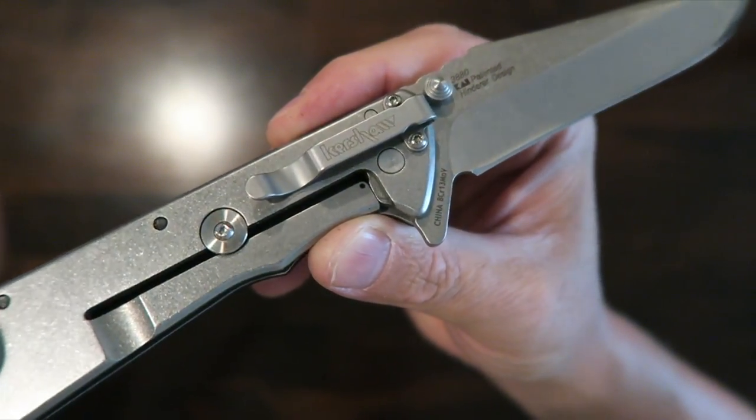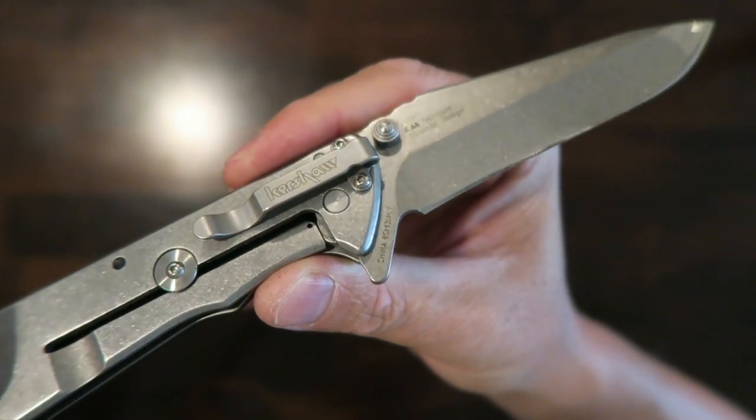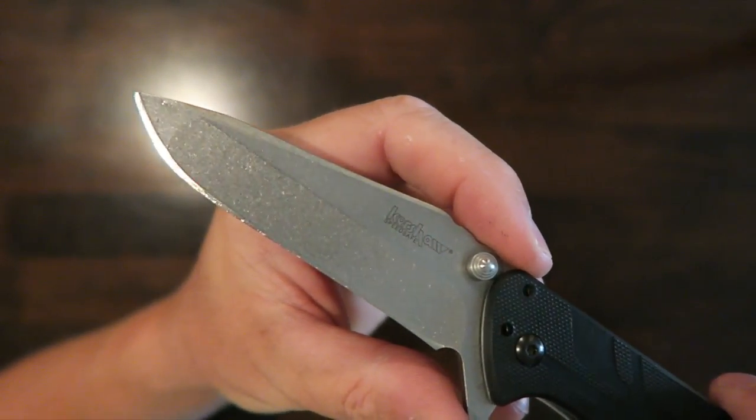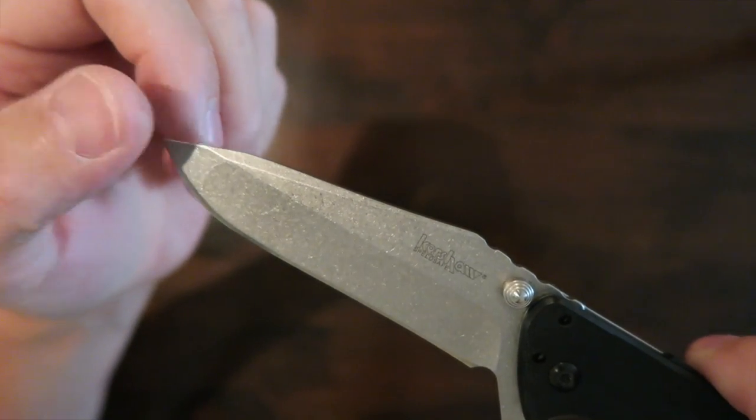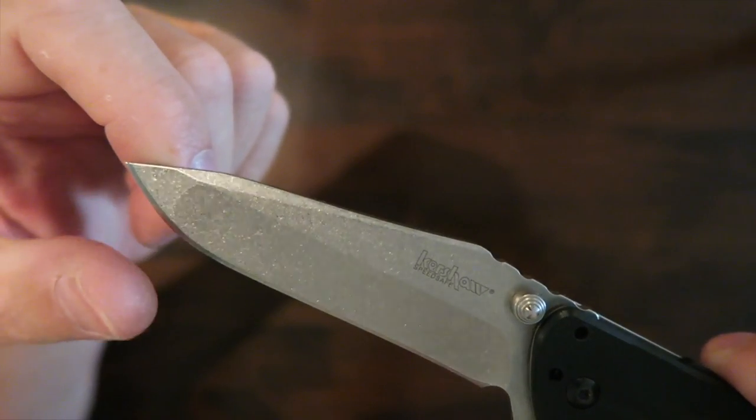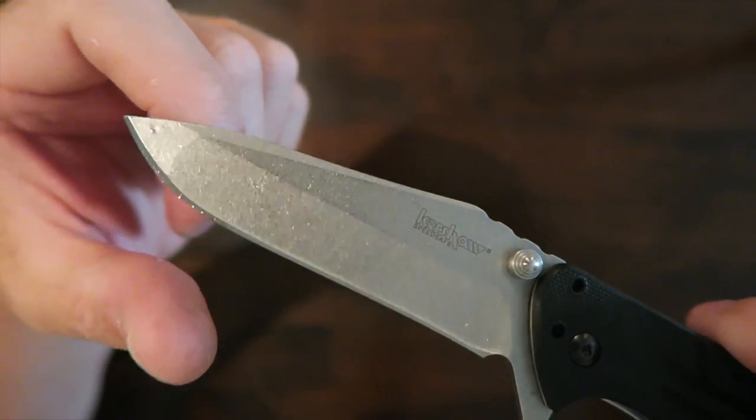So very nice looking blade. You can see that the stainless handle here is also stonewashed. So that's really cool. Look at the reverse side here. They call this their spanto tip. It's basically a spear point and a tanto kind of combined into one.